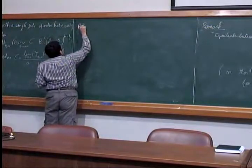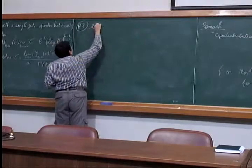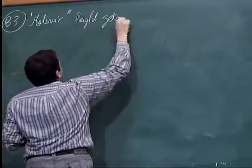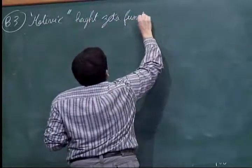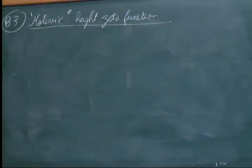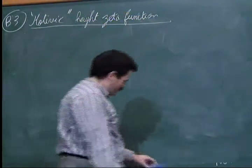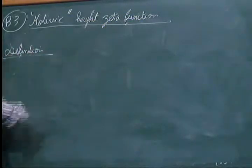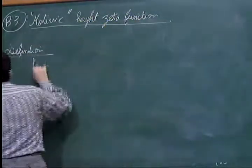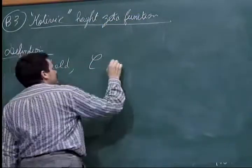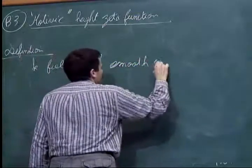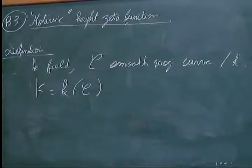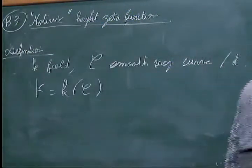Now let's do the same in the geometric context: the motivic height zeta function. I take k to be any field, C a smooth projective curve over k, and K the function field of this curve. I take V to be a projective variety over K — I do not impose V to come from the ground field k. I'm interested in the rational points, the points defined over K of V.